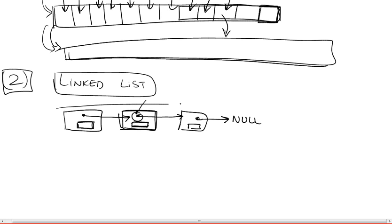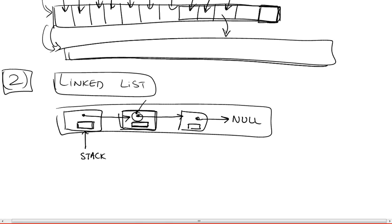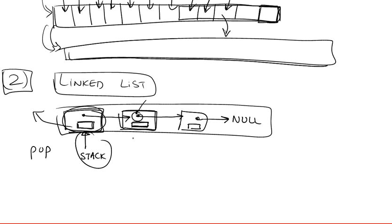This is an implementation of a stack. We have a pointer — call it 'stack' — which indicates where our stack starts, so we know where the header is and can retrieve it. When we pop an element, we retrieve the top element and move this stack pointer to the next one. We'll look in the next video at how to actually implement this in code as a linked list.